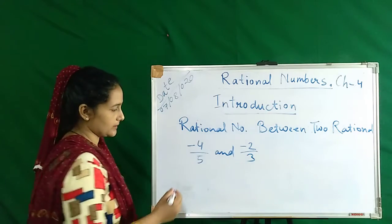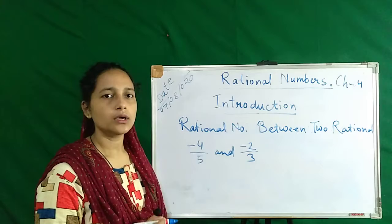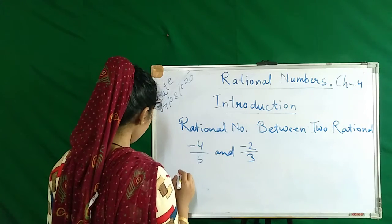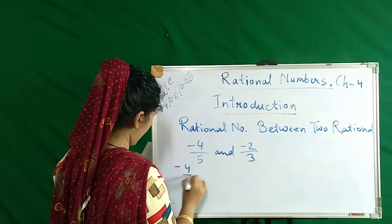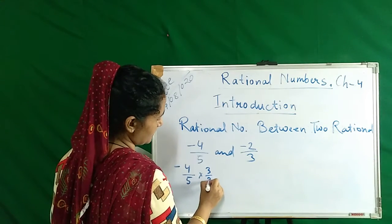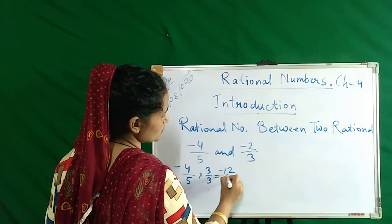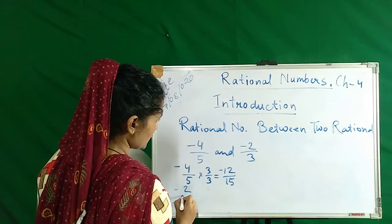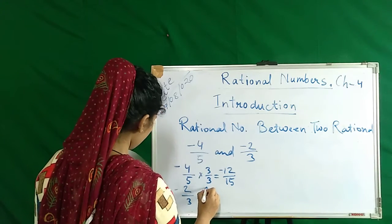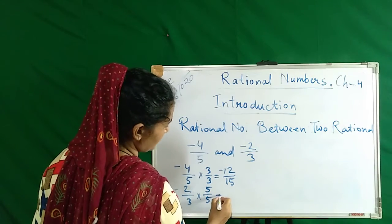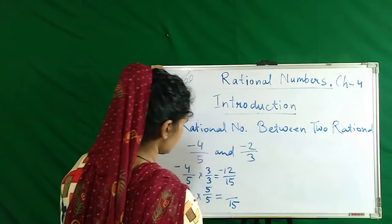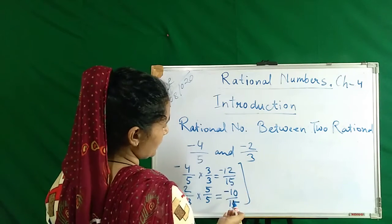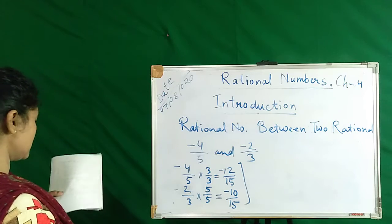So if we multiply both numbers to make the denominator the same: minus 4 by 5 multiplied by 3 gives minus 12 over 15. Then for minus 2 by 3, we multiply by 5, so the denominator becomes 15, giving minus 10 over 15.